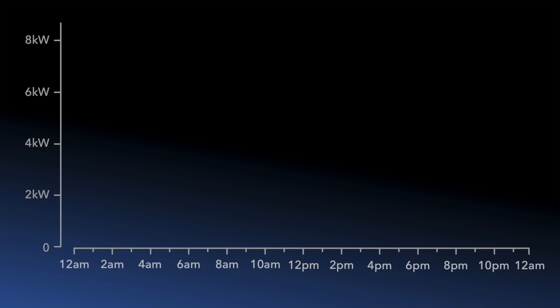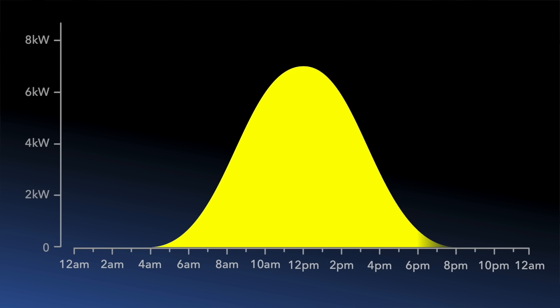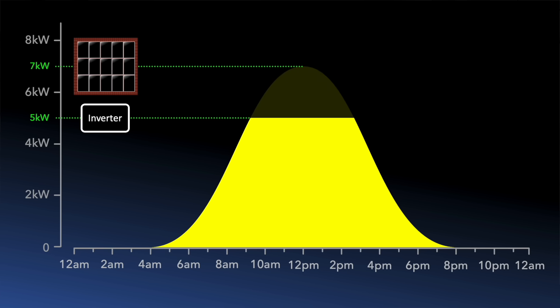Back to our example array and string inverter. If we assume the array is installed on a south facing roof in the UK, this chart illustrates the typical daily generation profile for a sunny summer's day. You can see that the generation peaks at midday, reaching the array's maximum output of 7 kilowatts. But the string inverter has a maximum AC output of 5 kilowatts, so when the generation exceeds this limit it is automatically clipped to 5 kilowatts, resulting in the flat top that you can see in the generation profile. All the generation above that is simply lost.